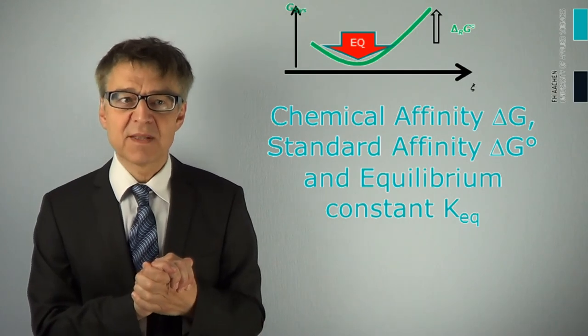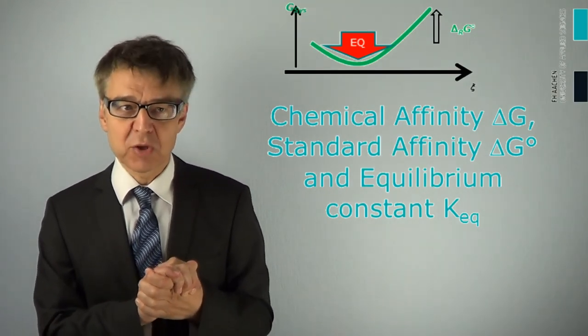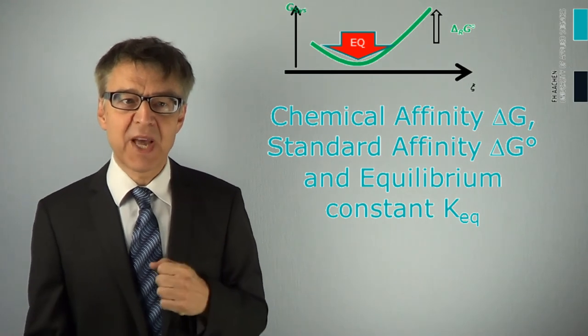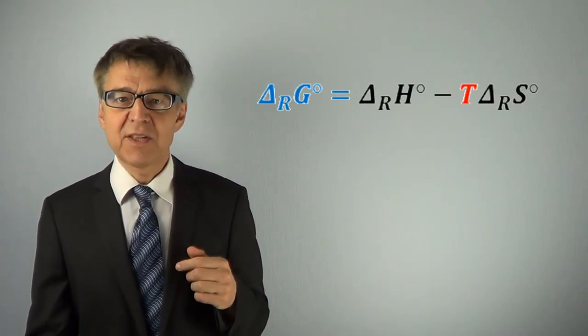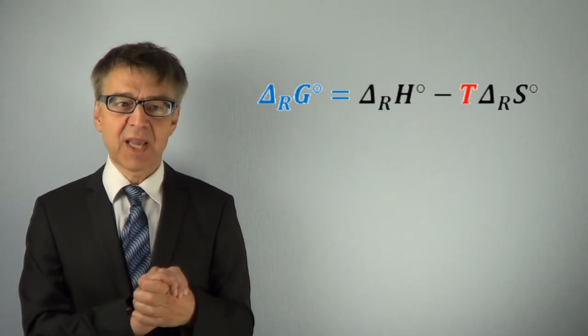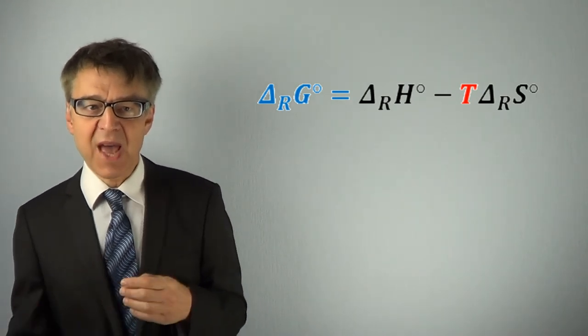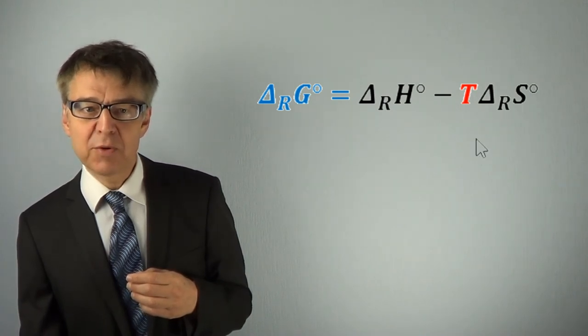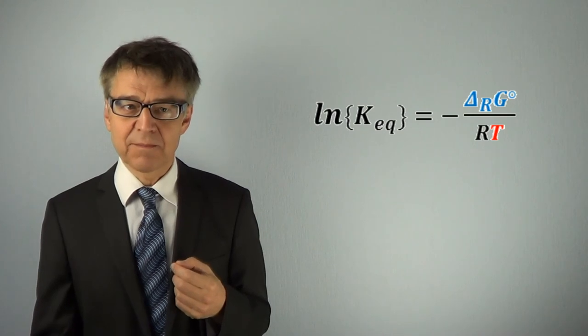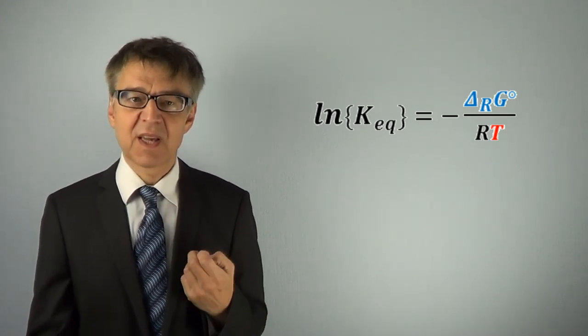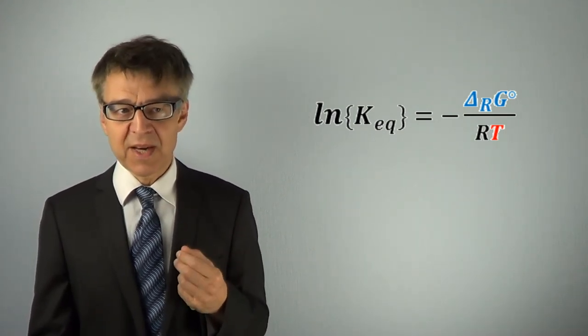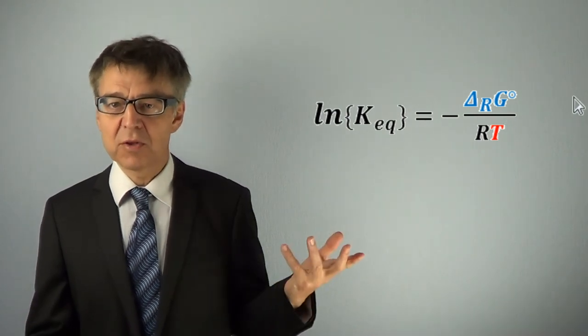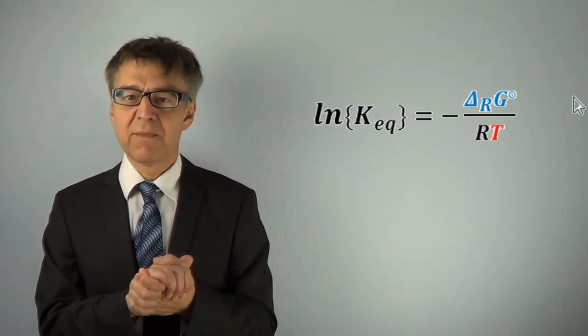Let's summarize. We may calculate the drive of a reaction when we calculate Gibbs free energy delta G. Delta G can be calculated by the Gibbs-Helmholtz equation from the enthalpy change delta H and the entropy change delta S. With negative delta G, we have an exergonic process that may run spontaneously. The equilibrium constant K can be calculated from the standard drive delta G naught. Thanks for watching, bye.